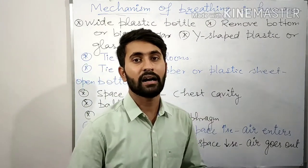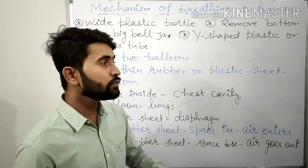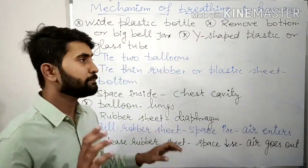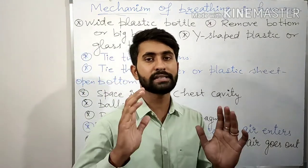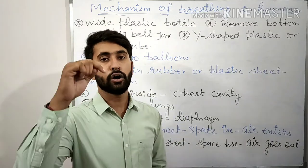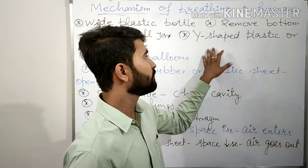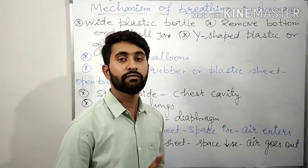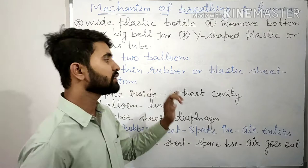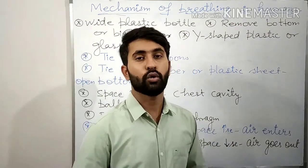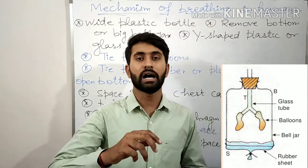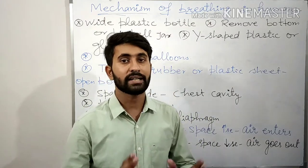For this activity, we need a large-size bottle with its bottom removed, or we can use a big bell jar, which is a glass jar whose bottom is open. We will take a Y-shaped plastic or glass tube, make a hole in the lid of the jar so the Y-shaped tube can pass through it, and tie two balloons at the two ends of the tube. We will also tie a thin rubber or plastic sheet around the open bottom of the jar, then close the mouth of the jar so that it becomes airtight.